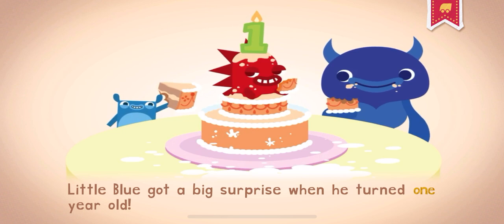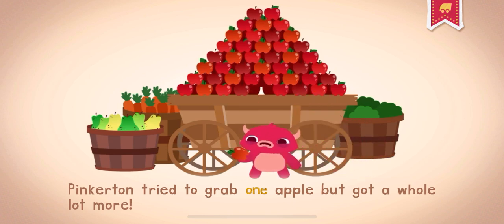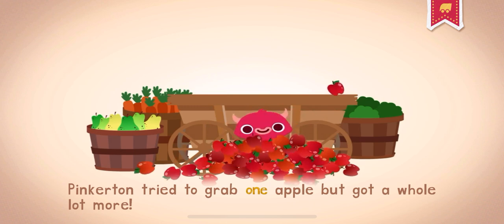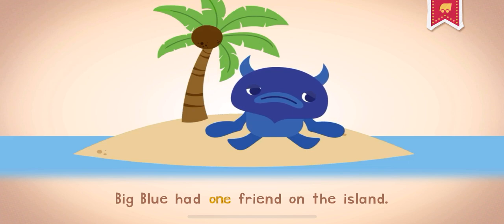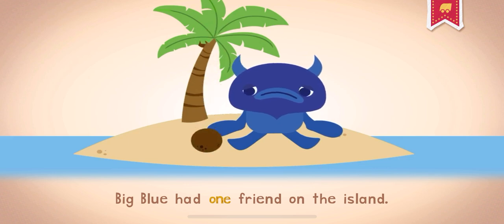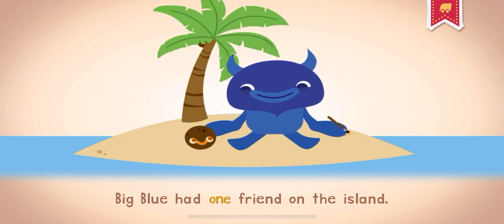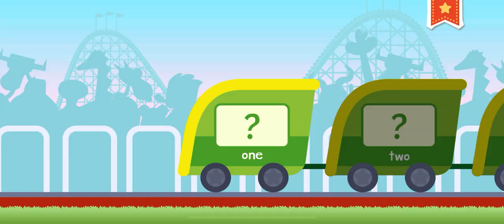Little Blue got a big surprise when he turned one year old. One. Pinkerton tried to grab one apple, but got a whole lot more. One. Big Blue had one friend on the island. One. Sometimes you have to take things one step at a time.